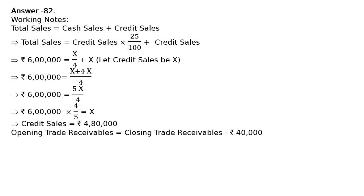Opening trade receivable equals closing trade receivable minus ₹40,000. Since closing trade receivable exceeds opening trade receivable by ₹40,000, deducting ₹40,000 from closing trade receivable gives opening trade receivable = ₹1,00,000 − ₹40,000 = ₹60,000.